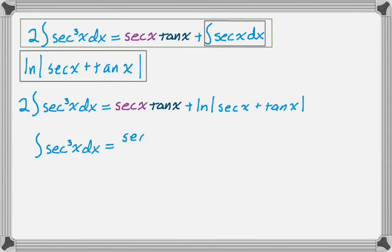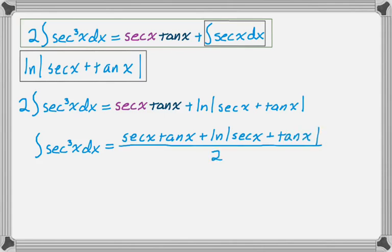So, finally, the integral of secant cubed of x dx is secant x tan x plus the natural log of the absolute value of secant x plus tan x all over 2, and then plus c. It would be horrible to forget plus c at that point.